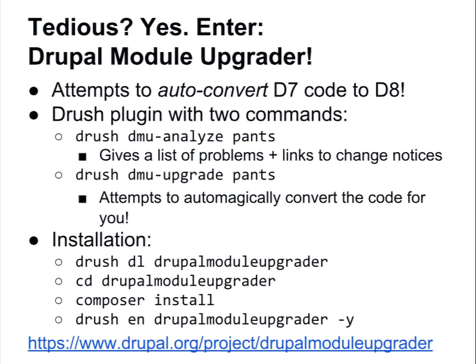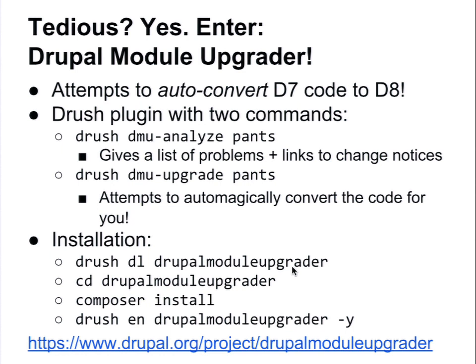So we're going to talk about the Drupal Module Upgrader, which is going to help a lot. What Drupal Module Upgrader does is it attempts to auto-convert your code from Drupal 7 to Drupal 8. It has two commands. One is an analyze command which will print you out a report that says for your module, here are the 30 of the 75,000 change records you need to care about. DMU Upgrade is the thing you want to do because it will actually automate a lot of things for you. It's a Drush script — you install it like any other Drush script, but there's this composer install command you have to run.